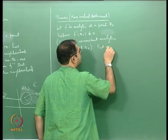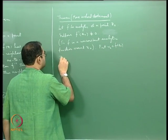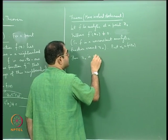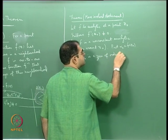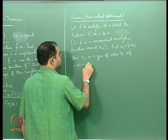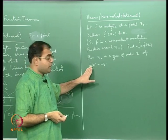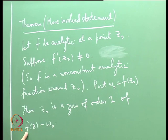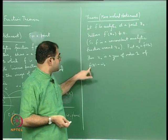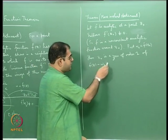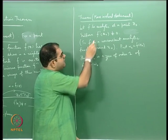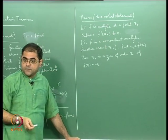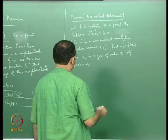Put w₀ = f(z₀); then z₀ is a zero of order 1 of f(z) − w₀. If I plug z = z₀ into f(z) − w₀, I get 0, so z₀ is indeed a zero. The derivative of f(z) − w₀ at z₀ equals f'(z₀), which is non-zero, so this is a zero of order 1.